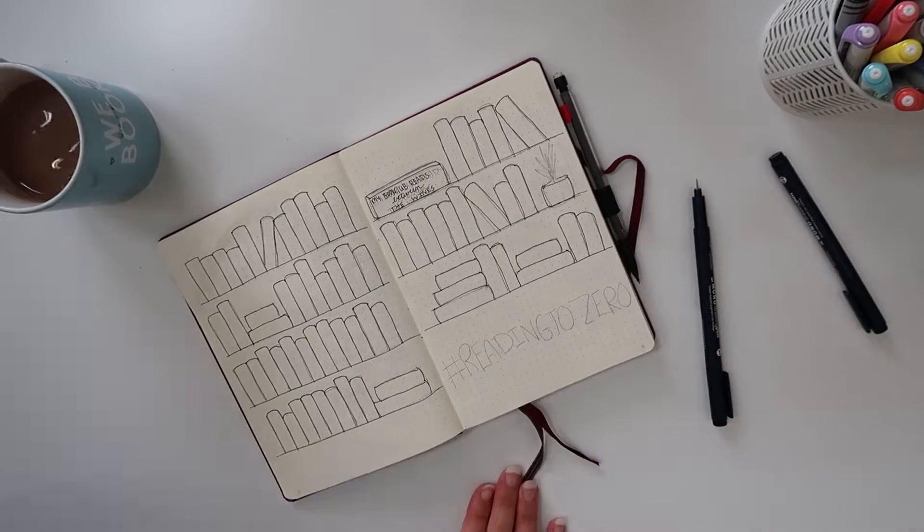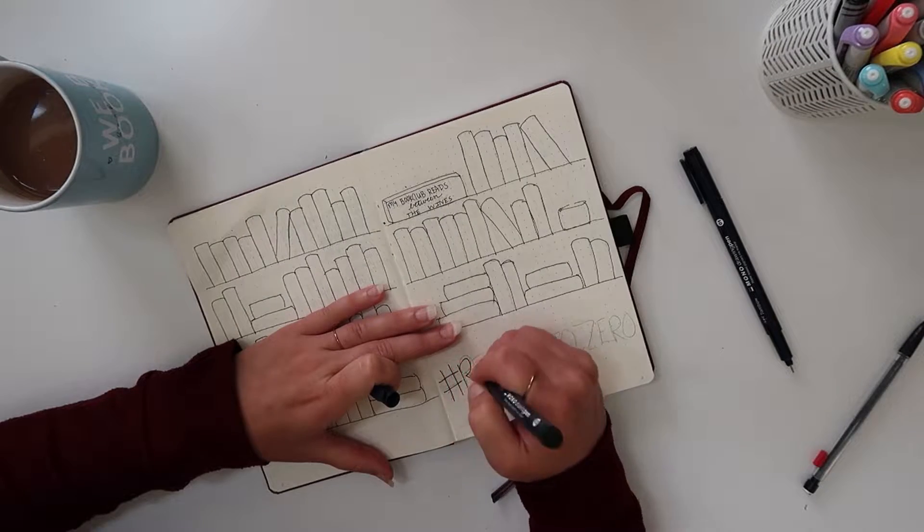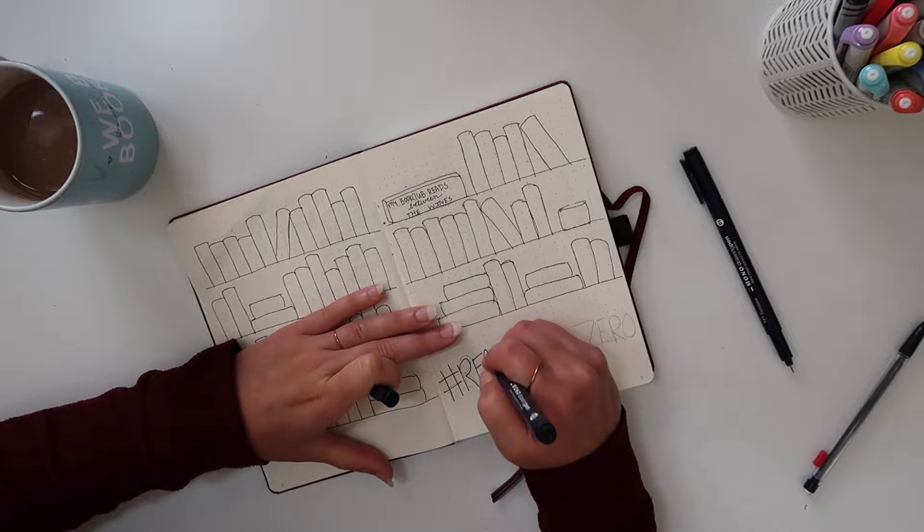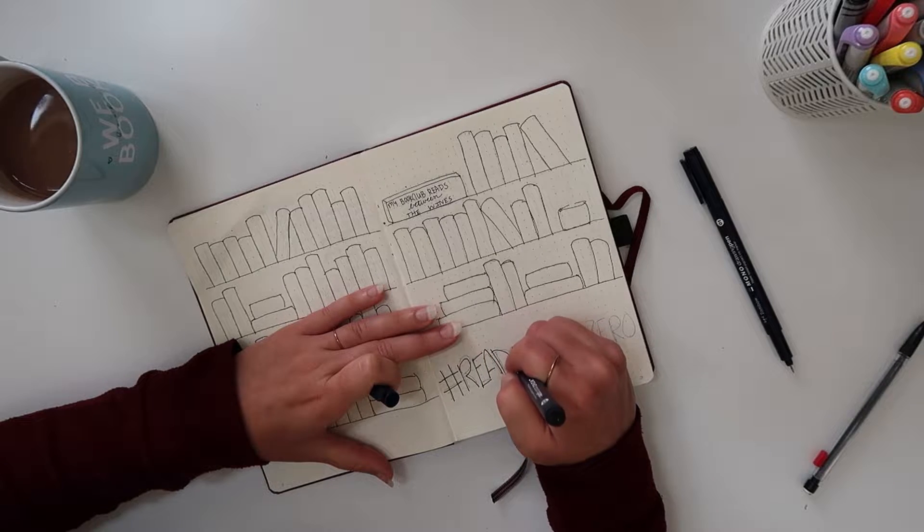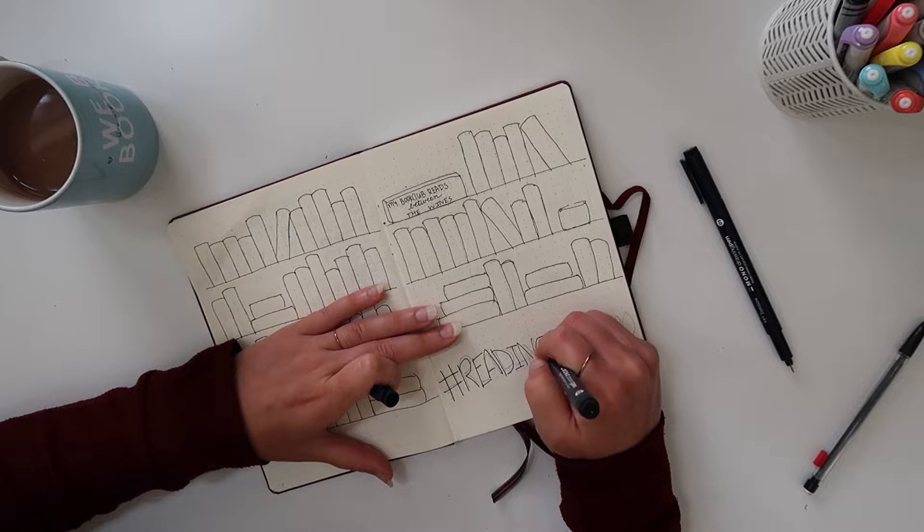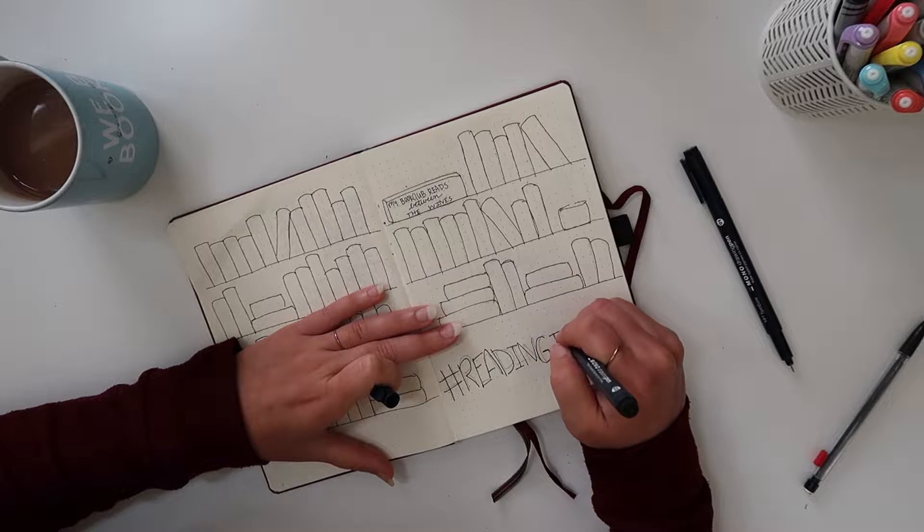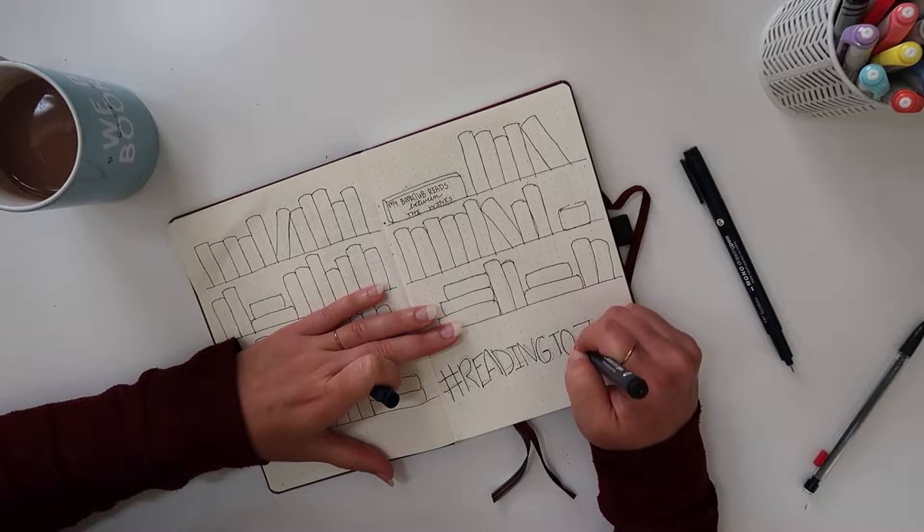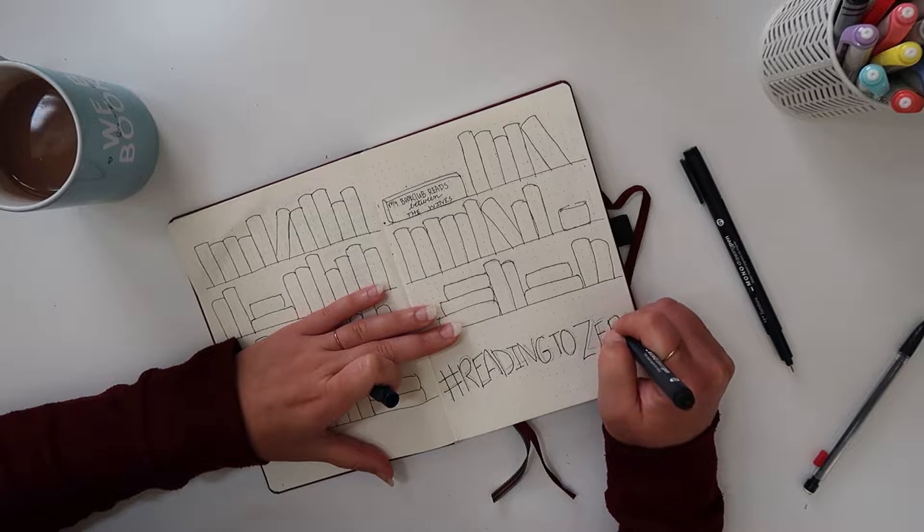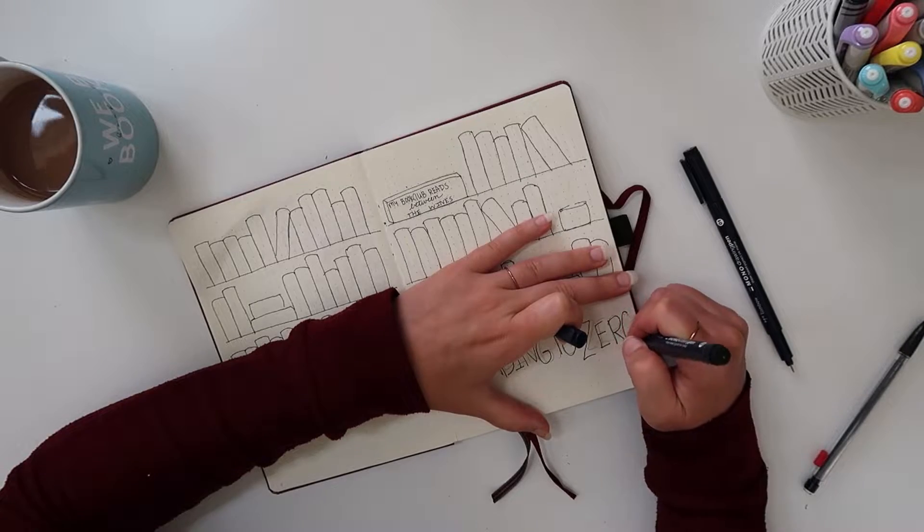So I have 148 books on my shelf and I decided to challenge myself to read all of those books or unhaul slash DNF by January 1st of 2023. So I have about 17 months, a year and five months in order to complete this challenge and you guys can do it along with me if you want to use the hashtag reading to zero.